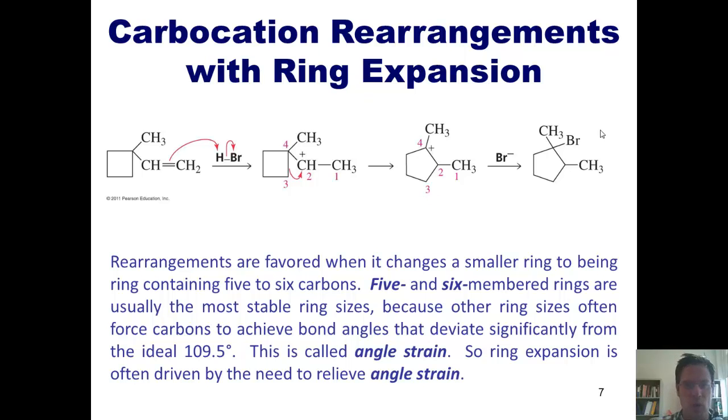Rearrangements like this one, one that ends up expanding a ring size, is favorable when doing so changes a smaller ring into a ring that has 5 to 6 carbons in it. 5 and 6-membered rings are usually the most stable ring sizes, because other ring sizes often force carbons to achieve bond angles that deviate significantly from the ideal 109.5 degrees. This deviation causes something called angle strain. So ring expansion, like the one shown here, is often driven by the need to relieve angle strain.